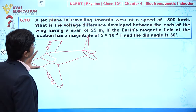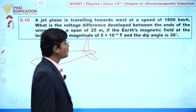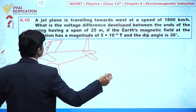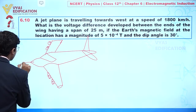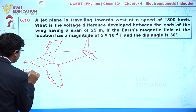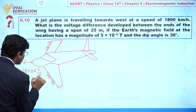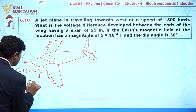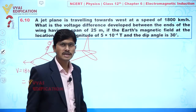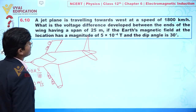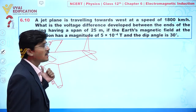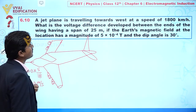The jet plane is traveling towards west, so it is going in this direction. The velocity is given as 1800 kilometers per hour, which we convert into meters per second, giving us 500 meters per second.